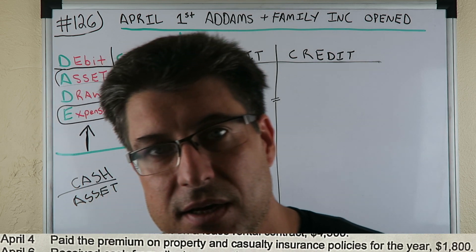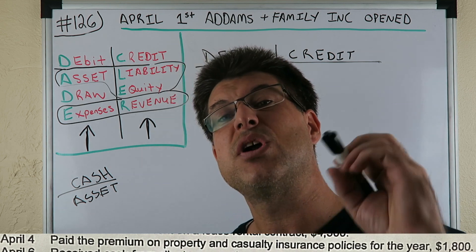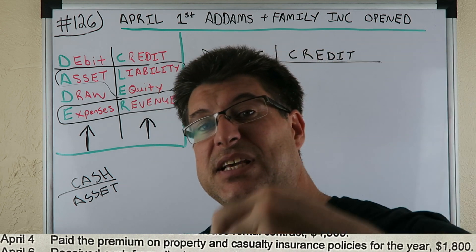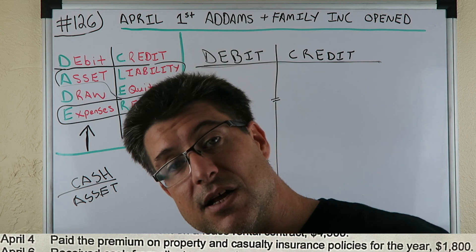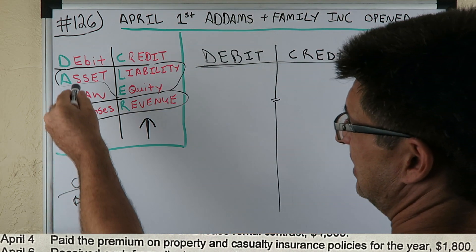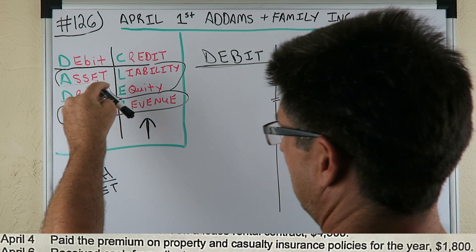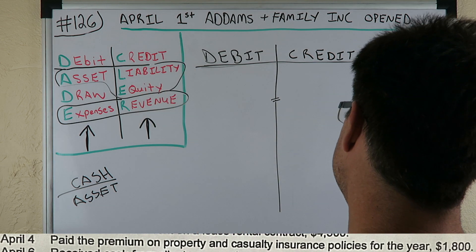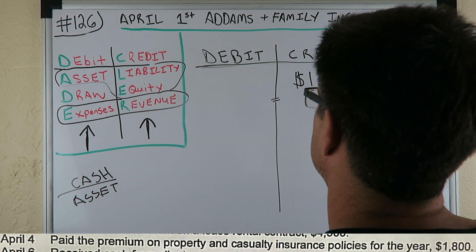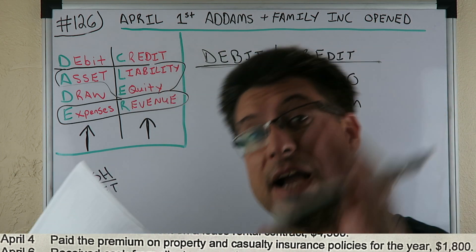If you pay somebody money — if you paid somebody cash of $1,800 — is your cash increasing or is your cash decreasing? If you paid somebody, that means your cash is going to be decreasing. You know cash is an asset. What happens if an asset is decreasing? You would credit it. It was increasing, we debit it, but we paid somebody, so it is decreasing — so we are going to credit $1,800 in cash. That's going to be our credit. What's going to be our debit? Why did we have that outlay of cash?